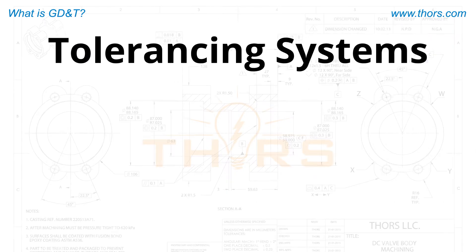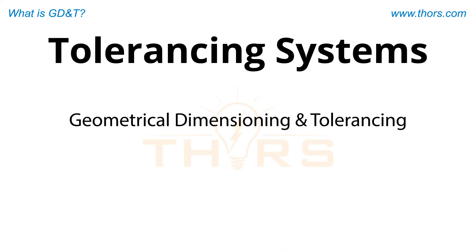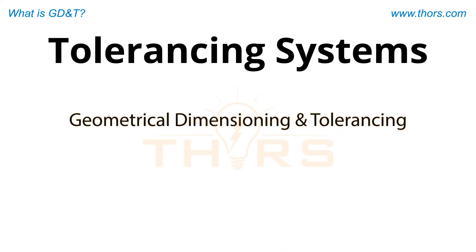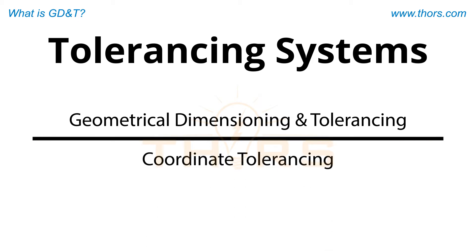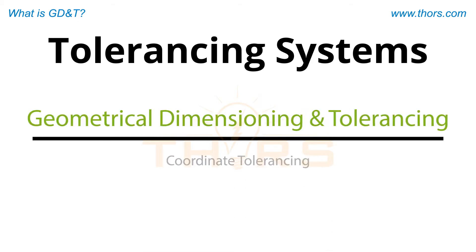As a tolerancing system, GD&T offers an enhanced version of an engineering drawing that clearly conveys design intent over other systems such as coordinate tolerancing.